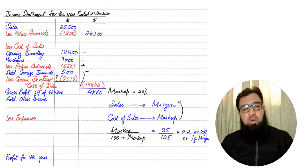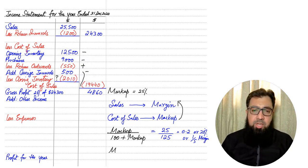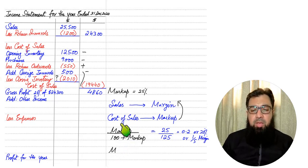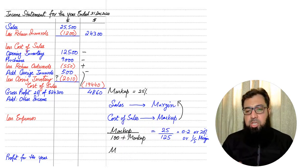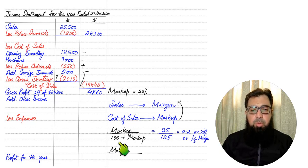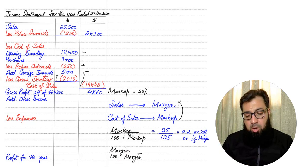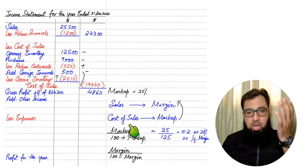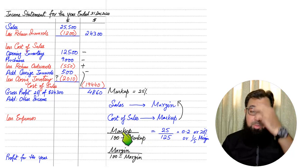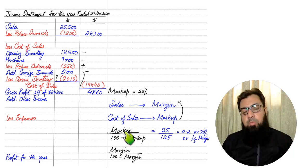If we are given margin and need to find markup, margin cannot be applied on cost of sales — we need a markup figure. The formula to convert margin to markup is: margin ÷ (100 − margin). So to remember: markup uses the plus formula — markup ÷ (100 + markup) = margin; margin uses the minus formula — margin ÷ (100 − margin) = markup. When we have markup we use plus, and when we have margin we use minus.